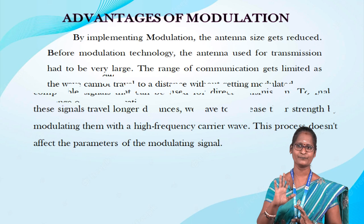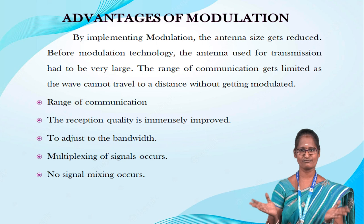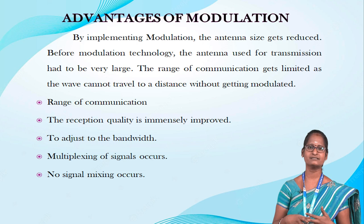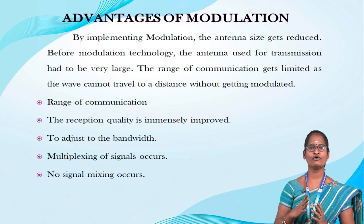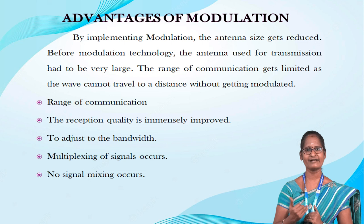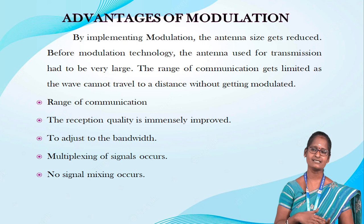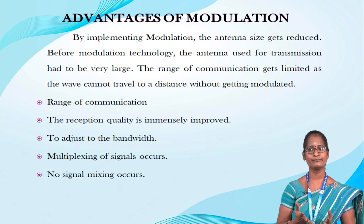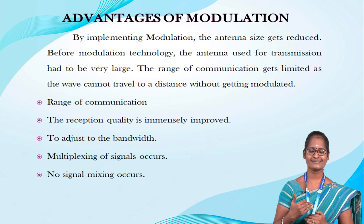Advantages of modulation: by implementing modulation, the antenna size gets reduced. Before modulation technology, the antenna used for transmission had to be very large. The range of communication gets limited and the wave cannot travel a distance without getting modulated. The range of communication has increased. The third advantage is that reception quality is immensely improved. The receivers are allowed to adjust the bandwidth, and multiplexing of signals allows signal mixing to occur.